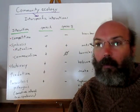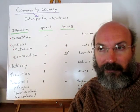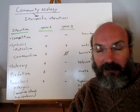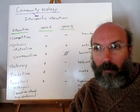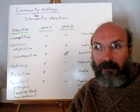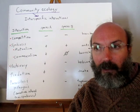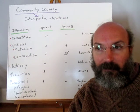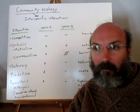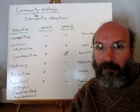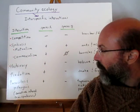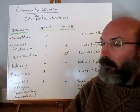In commensalism, one organism benefits while the other doesn't seem to be hurt or helped. A commonly represented example is barnacles growing on a whale or sea turtle. The barnacle benefits by moving through the water column, getting a food source, and having a substrate to attach to. The whale or turtle doesn't appear to gain anything from the relationship, so it's considered commensal.